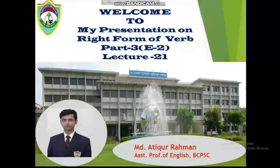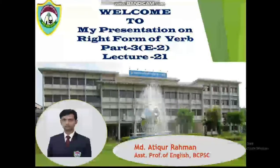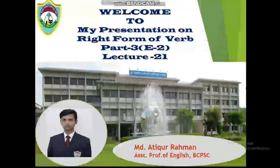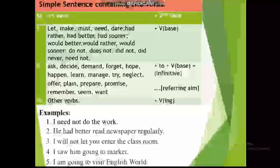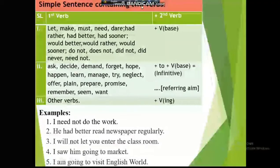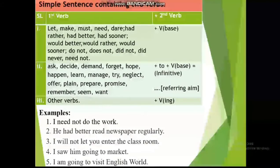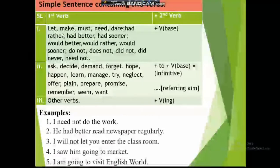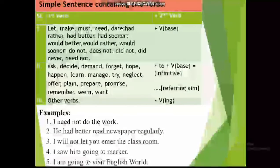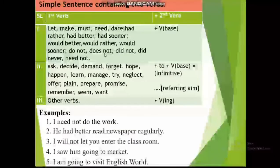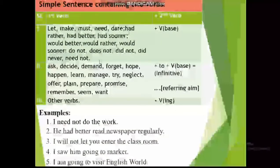Today I would like to deliver my lecture on the topic 'Right Form of Verb' from English Second Paper. This class is applicable both for intermediate first year and second year students. The first rule is that in a simple sentence containing two verbs, if the first verb is one of these: let, make, must, need, dare, had rather, had better, had sooner, would better, would rather, would sooner, do not, does not, did not, never, need not — after all these verbs, the second verb must be in simple base form.